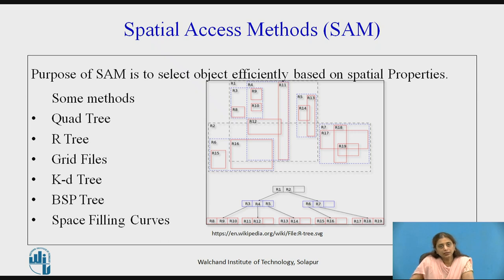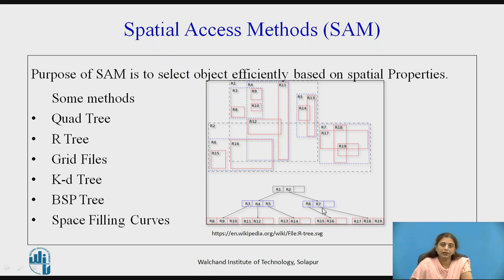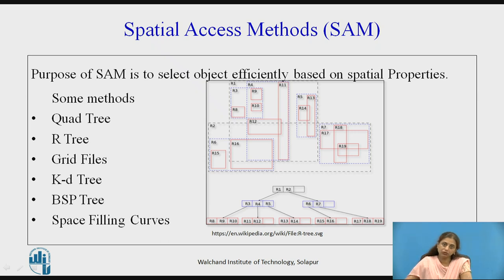For fast retrieval we use indexing, also called the spatial access method. There are several such methods, out of which we are going to use the R-tree. The R-tree stores the minimum bounding rectangle based on positions.